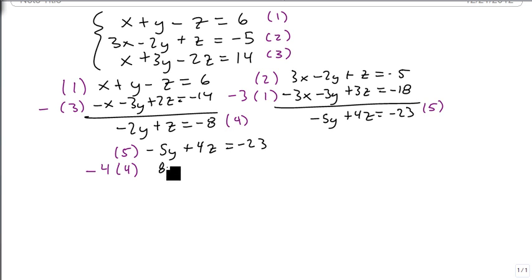So minus 5y plus 4z equals minus 23. We're going to get 8y minus 4z equals 32. And when we add these together, 8y minus 5y is 3y. 32 minus 23 is 9. So 3y equals 9, divide by 3, and we get that y is 3.